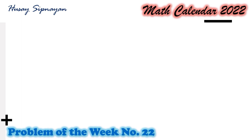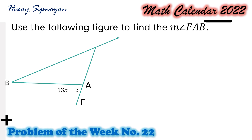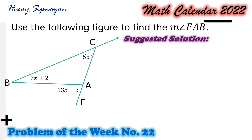Here now is our featured problem for Week 22, and this is on Geometry. Use the following figure to find the measure of angle FAB. In the figure, we have angle FAB equals 13x minus 3, angle ABC equals 3x plus 2, and angle BCA or angle ACB equals 55 degrees. Here is our suggested solution.